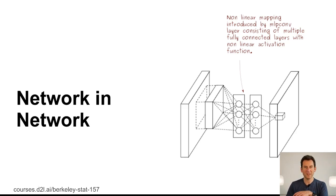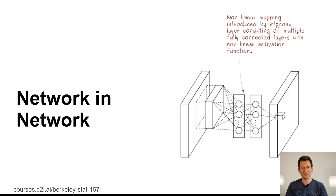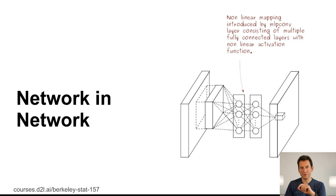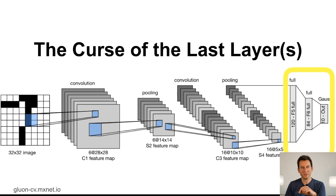Let's talk about how we can actually make those networks a little bit smaller. Networks in networks are a convenient strategy for doing this. If you look at the picture, you basically see that there's a multi-layer perceptron inserted as intermediate layers in the convolutional network. That sounds like an abstruse and peculiar idea, and when it was published, people didn't quite appreciate the impact of it. Let's have a look at why it actually matters.